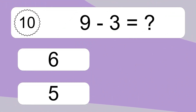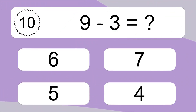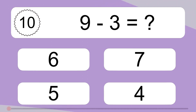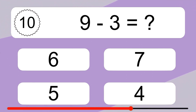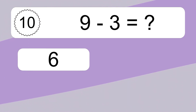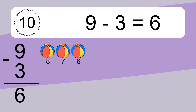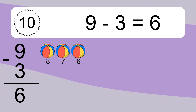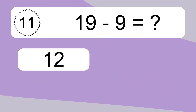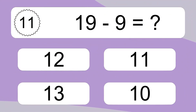9 minus 3 equals what? 9 minus 3 equals 6. Let's count it: 8, 7, 6.